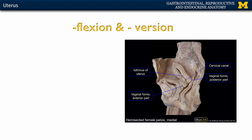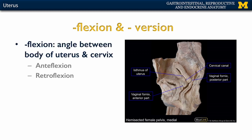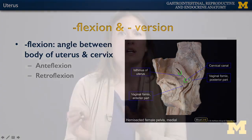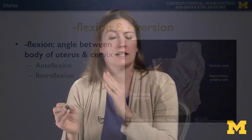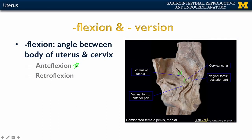We introduced the term flexion when describing the direction of the uterus. There are two real ways to discuss this: flexion as well as version. With flexion, we're focused on the angle between the body of the uterus and the cervix. Anteflexion means the body of the uterus is tilted more anteriorly, whereas retroflexion means the body of the uterus is more posteriorly tilted. Anteflexion is the more typical presentation.